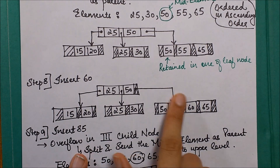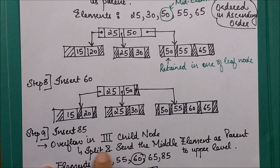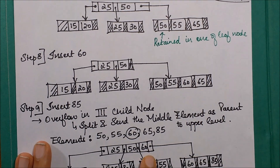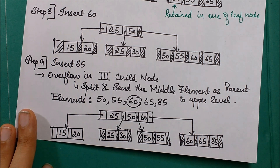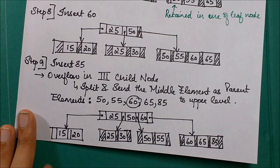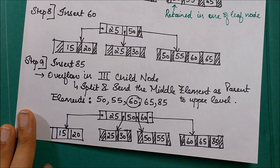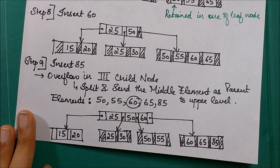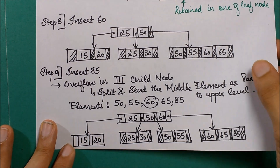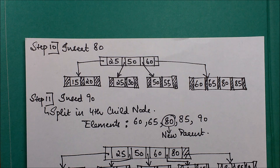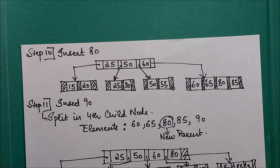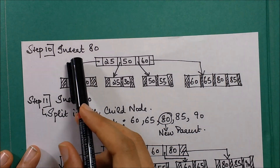We continue inserting 60, which goes to the right-hand side of 50. Then we insert 85 — again a split occurs, and 60 goes to a higher level. Practice this entire question on your own, then recheck the steps by going through the video again. Don't just memorize — understand the concept clearly, then verify your tree structures at each step.